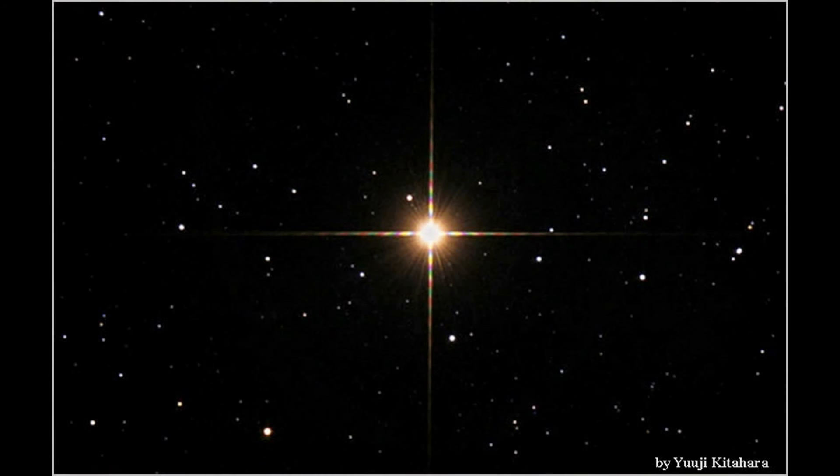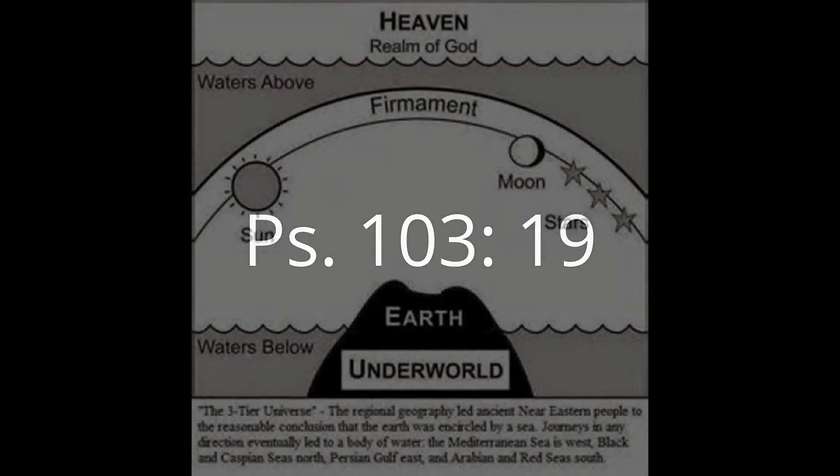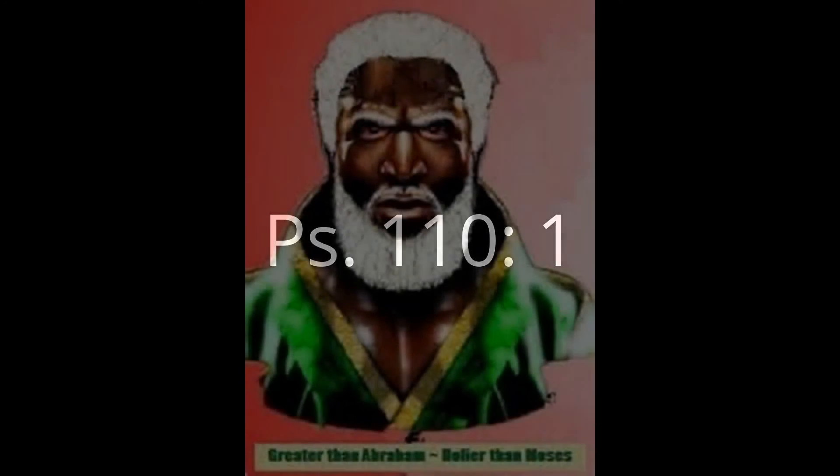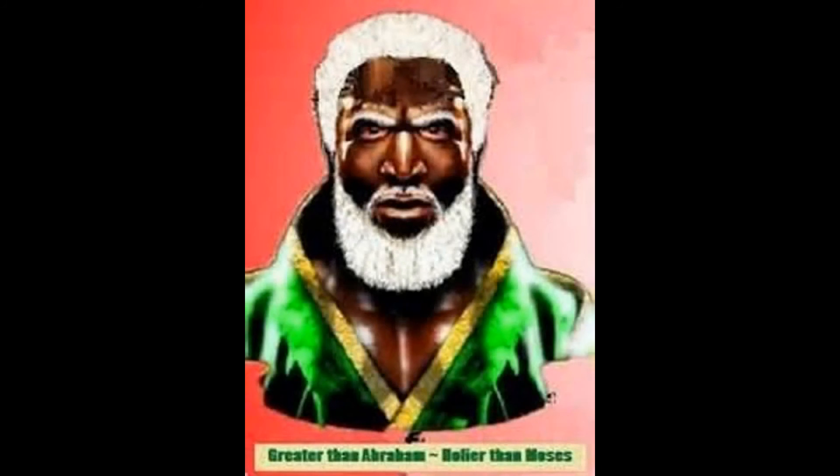Let's go to Psalm 103 verse 19: 'Yahweh hath prepared his throne in the heavens, and his kingdom ruleth over all.' Now let's go to Psalm 110 verse 1: 'Yahweh said unto my Adonai, Sit thou at my right hand until I make thine enemies thy footstool.' So who's sitting on the right hand of Yahweh? That is the son, Yahweh-shai, sitting on the right hand of the Father, which is Yahweh.